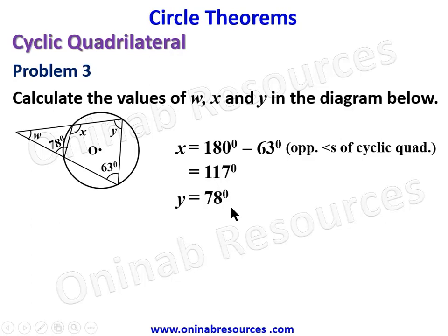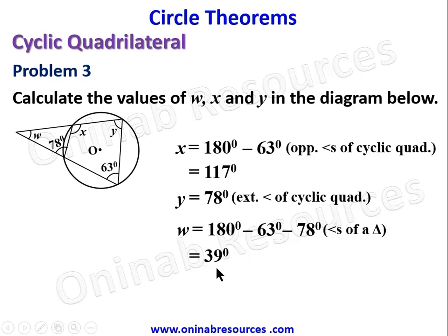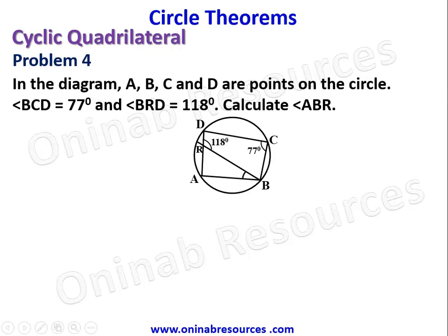For Y: Y equals 78 degrees, since the exterior angle of a cyclic quadrilateral equals the opposite interior angle. For W: using the angle sum of a triangle, W equals 180 minus 63 minus 78 degrees, giving 39 degrees.